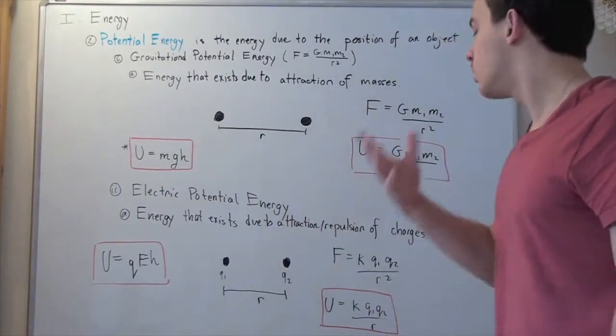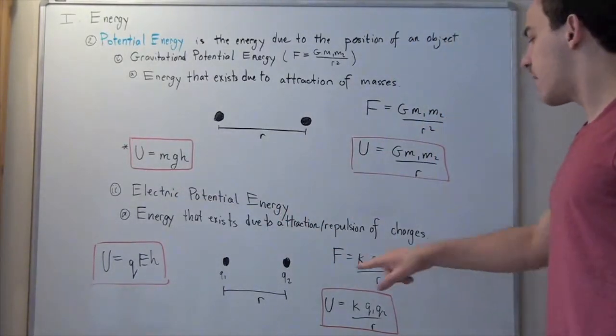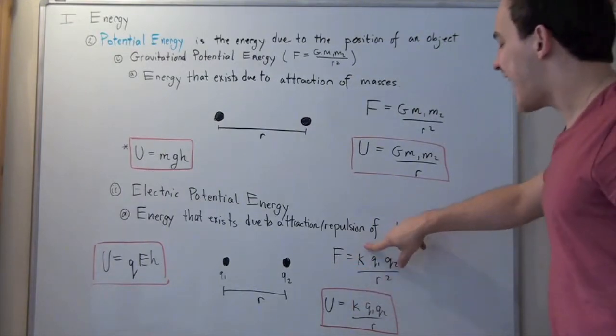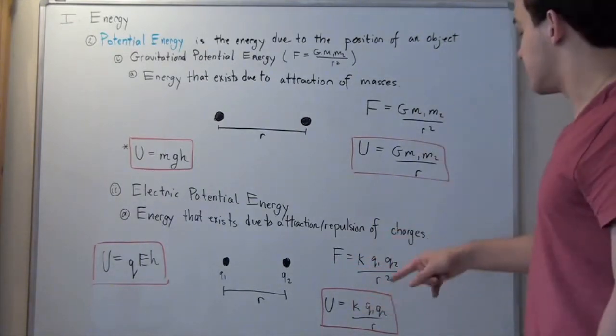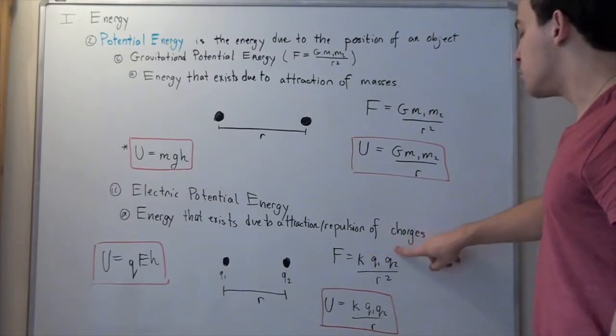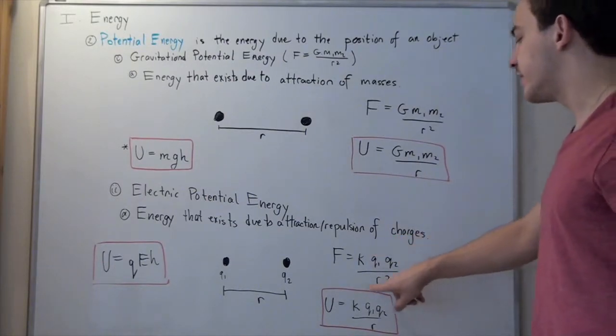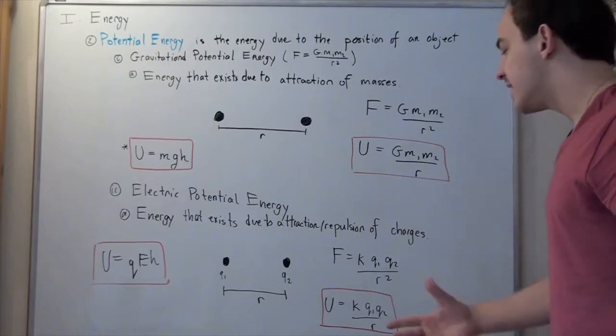F equals K, now the Coulomb's constant, multiplied by charge one, multiplied by charge two, divided by the distance between the center of masses squared. And once again, if I want to find my energy, I simply multiply F by the distance, in this case R.